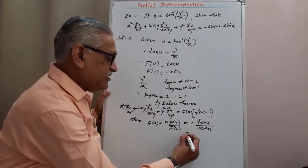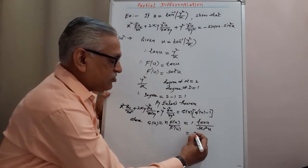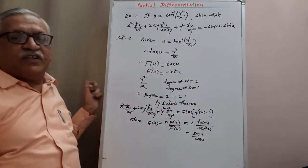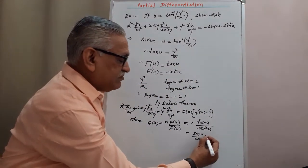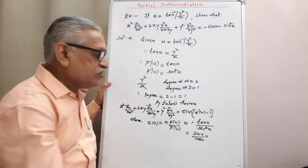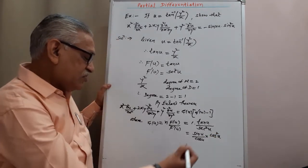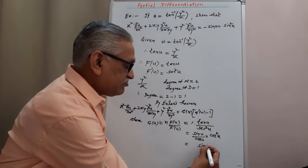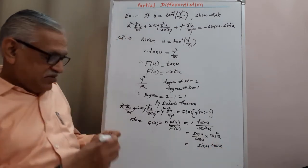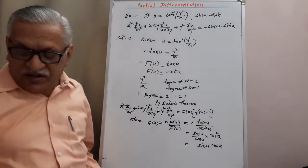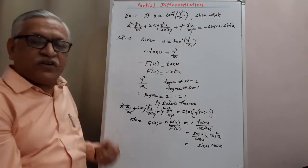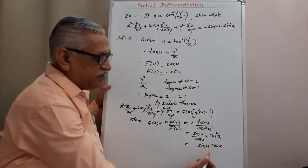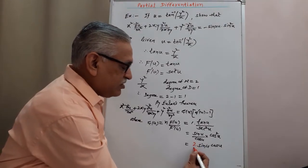Therefore, we get this as tan(u) / sec²(u). We convert to sine and cosine because the required result has sine terms. tan(u) = sin/cos, and 1/sec²(u) = cos²(u), so we get sin(u) · cos(u). Since the required result needs a sin(2u) term, and the identity is 2·sin(θ)·cos(θ) = sin(2θ), we multiply and divide by 2.